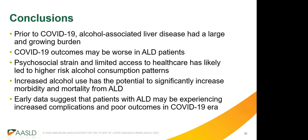In conclusion: prior to COVID-19, alcohol-associated liver disease had a massive and growing burden in the United States and worldwide. Early in the pandemic, we observed worse outcomes from COVID-19 infections among patients with ALD. There has been significant collateral damage related to the pandemic, including psychosocial strain and limited access to health care, which may be leading to more high-risk drinking. There are already early signs that patients are experiencing poor outcomes including delays in care and an increase in alcohol-related hepatitis. Furthermore, an increase in relapses or an inability to confirm sobriety could lead to transplant listing challenges for many patients.